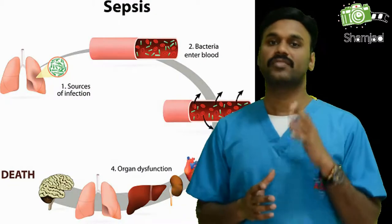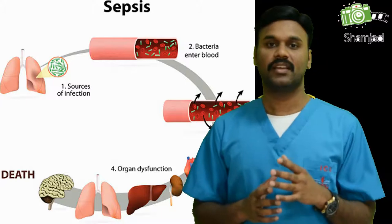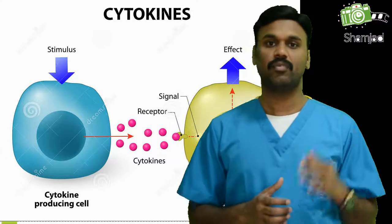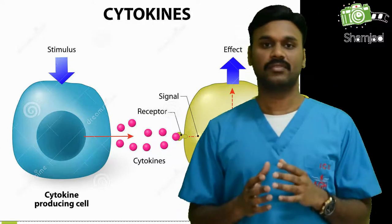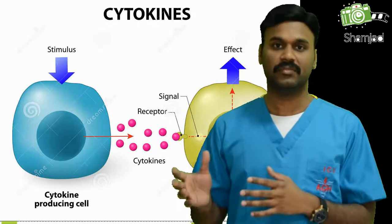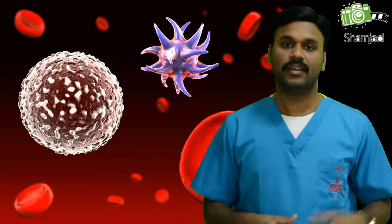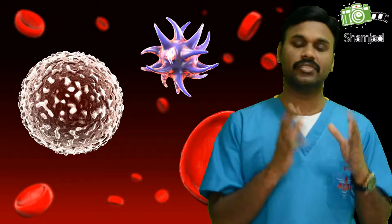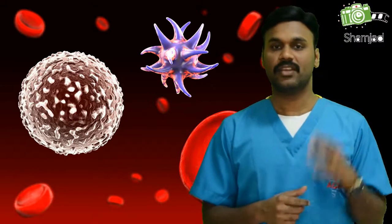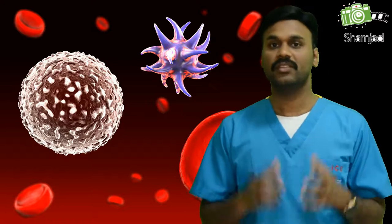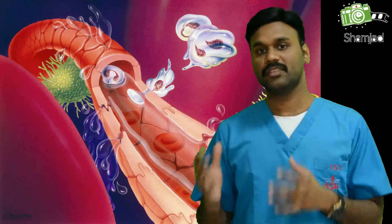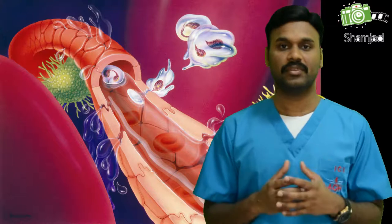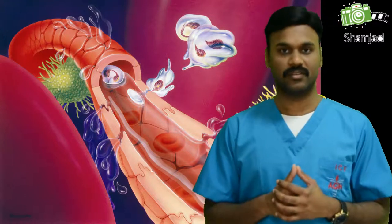Hypotension occurs mostly because of cytokines — small proteins that are important immunomodulatory agents. They have both pro- and anti-inflammatory responses correlating with the immune system and are effective in defensive mechanisms. On the other hand, cytokines may dysregulate the immune response, causing tissue-damaging inflammation. During sepsis, cytokines are released into the bloodstream in large amounts, causing massive vasodilation, increased permeability of the capillaries, and decreased systemic vascular resistance.